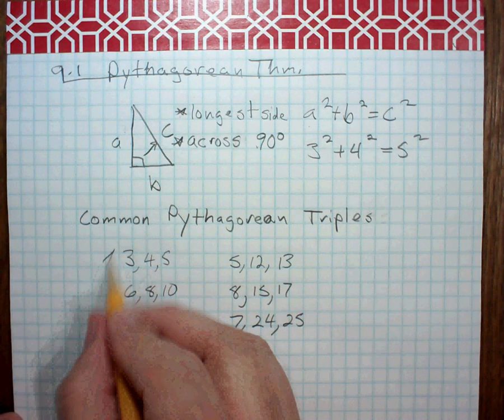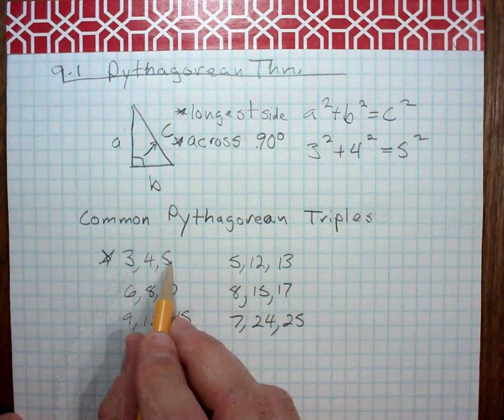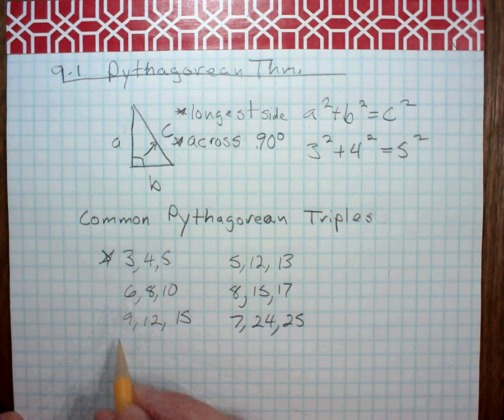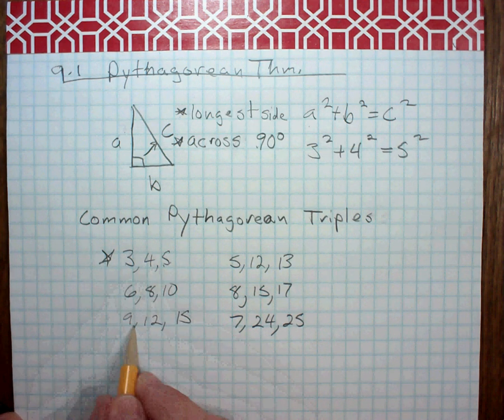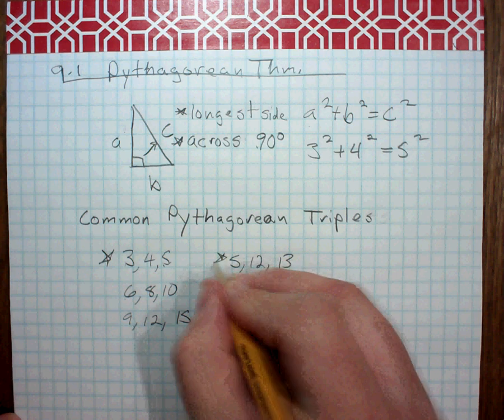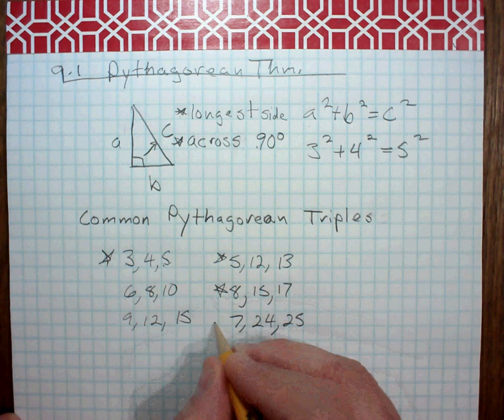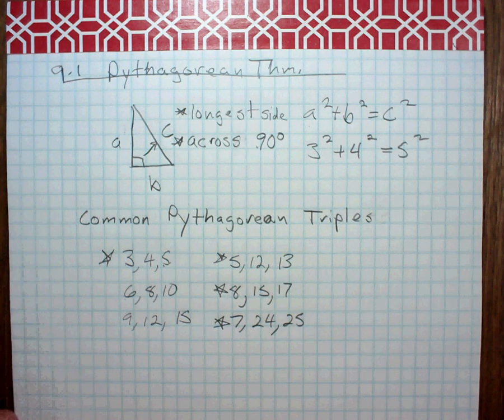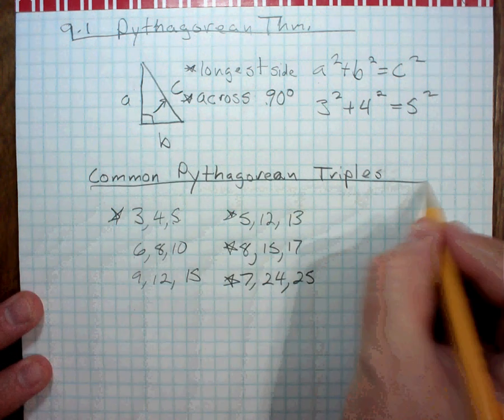But if you notice, like this one, if you multiply everything by 2, you get this one. If you multiply this first one by 3, you get this one. So you can multiply any of these by 2, 3, 4, and you'll get the same ratios. Okay? So those are the common Pythagorean triples.